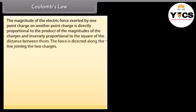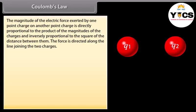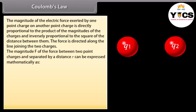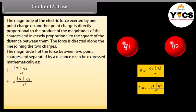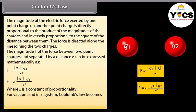Coulomb's law: The magnitude of the electric force exerted by one point charge on another is directly proportional to the product of the magnitudes of the charges and inversely proportional to the square of the distance between them. The force is directed along the line joining the two charges. Mathematically, F = k|q₁||q₂|/r². In SI units for vacuum, this becomes F = (1/4πε₀) × |q₁||q₂|/r².